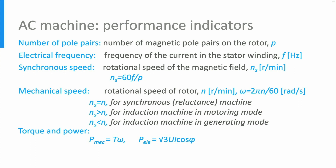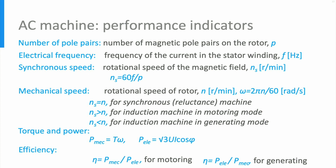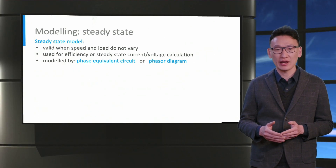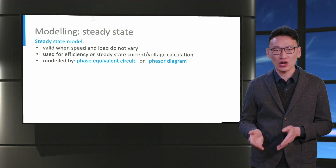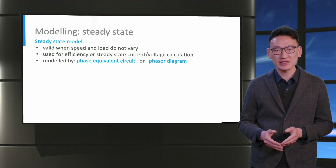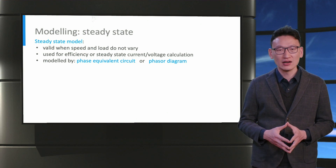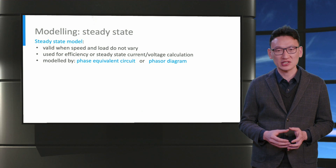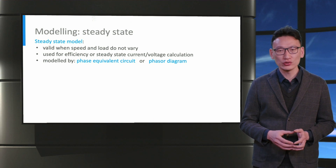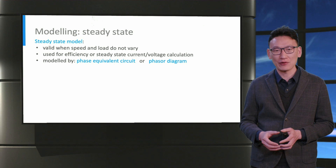The next indicators are torque and power, which have already been discussed in previous slides. The last indicator is efficiency, which can be calculated as the ratio of mechanical to electrical power for motoring operation, and the ratio of electrical to mechanical power for generating operation. Modeling of electrical machines is needed for various purposes including powertrain sizing, performance evaluation, and control. In steady-state modeling, the model is only valid when speed and load are not varying, and is used for efficiency or steady-state current and voltage calculation. The model can be built using either a phase equivalent circuit or a phasor diagram.